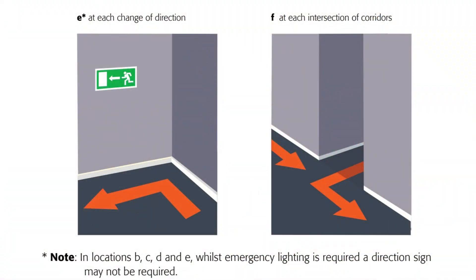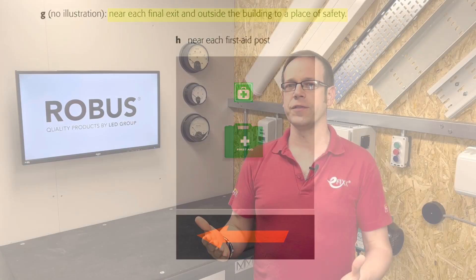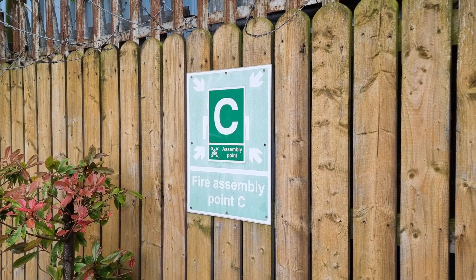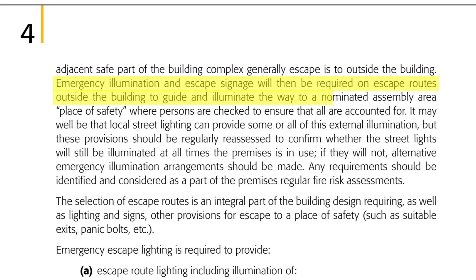Over the page we find more examples of where escape lighting luminaires are needed, including at each change of direction and intersection of corridors to stop people running into walls and other people. A critical and sometimes overlooked point: near each final exit and outside the building to a place of safety. It's not enough just to get people to the great outdoors — we need to get them to the assembly point. Emergency illumination and escape signage will be required on escape routes outside the building to guide people to a nominated assembly area where all persons are checked to be accounted for.